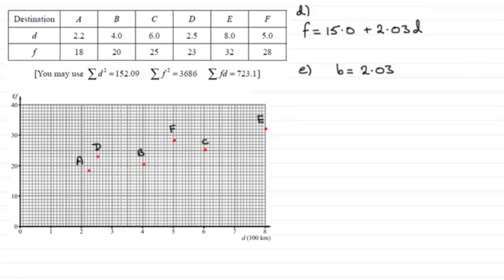And what I'm going to do is just quickly sketch on this regression line. And to do that, what I can say is that when D is 0, F is 15. So that would be a point, say about here. And I need another point being a straight line.